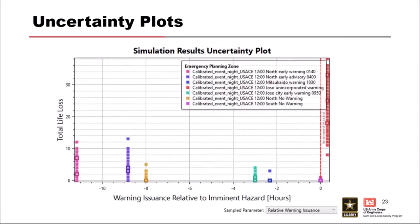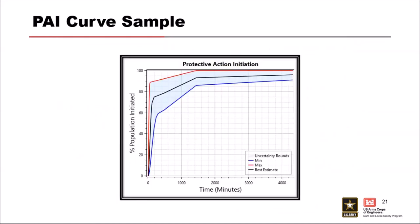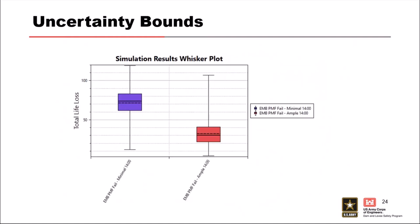Another plot lets you break down results by different EPZs, showing how life loss will vary group to group. For the uncertainty balance view, the most common comparison is minimal versus ample warning. With the ample warning scenario, the box plot for life loss comes down significantly — a simple way to show how much warning matters by constraining distributions and showing them side by side.